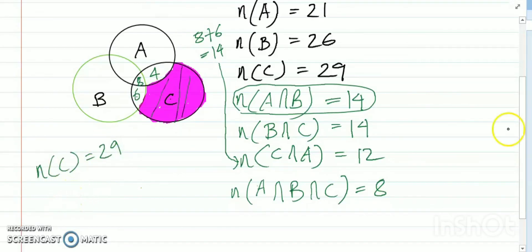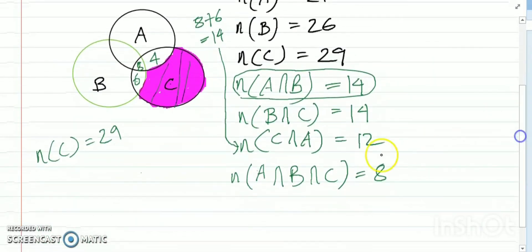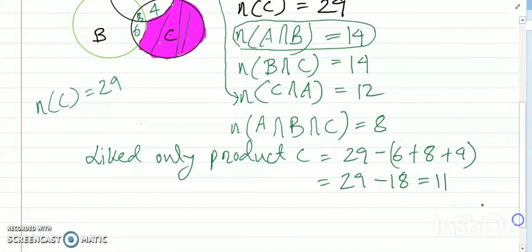Those who liked only product C equals 29 minus 18, which equals 11. Thanks for watching, this is my answer.